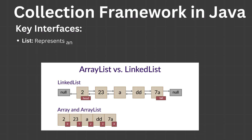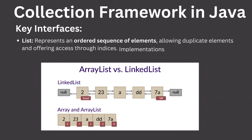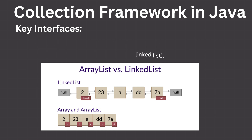List: Represents an ordered sequence of elements, allowing duplicate elements and offering access through indices. Implementations include ArrayList, which is dynamically sized, and LinkedList, which is a doubly linked list.